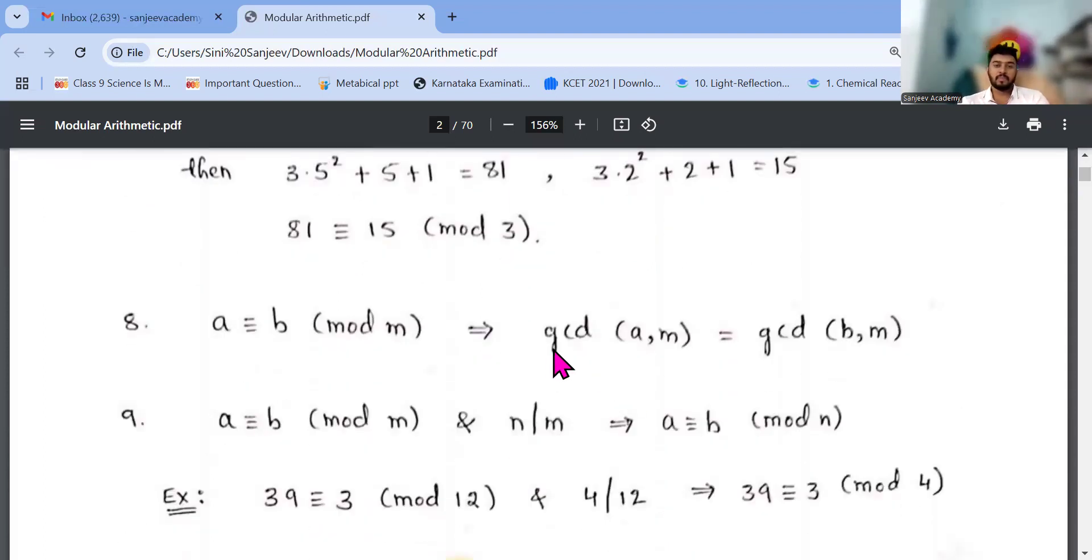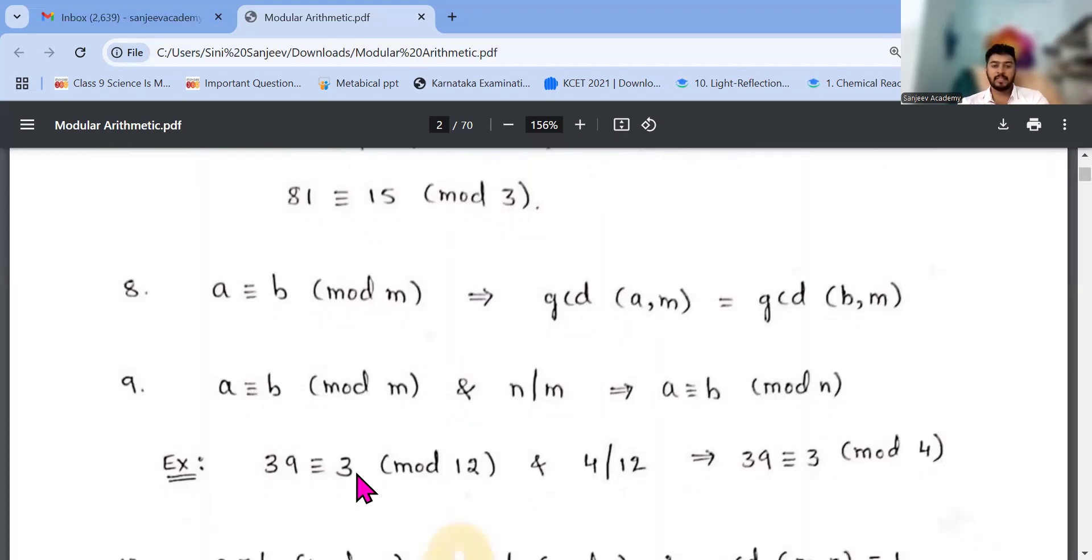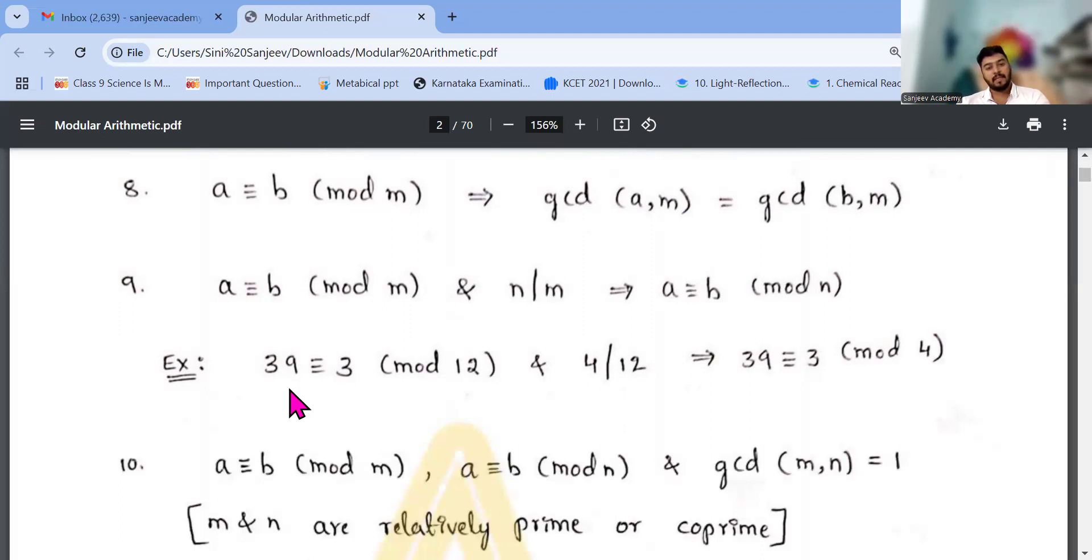Then gcd of a comma m equals gcd of b comma m. Similarly, if n divides m, then a congruent to b mod n. So I will see an example here. 39 congruent to 3 mod 12, and 4 divides 12, so 39 congruent to 3 mod 4. So 4 divides 12, n divides m, where m is nothing but our 12, n is nothing but 4.